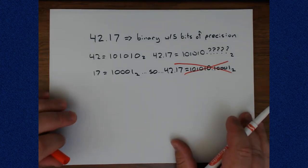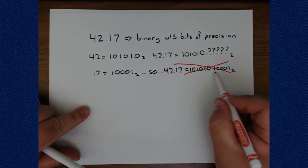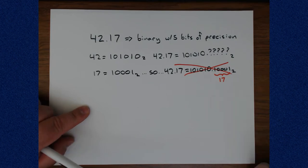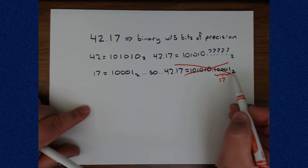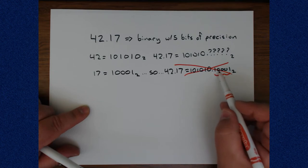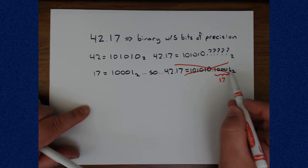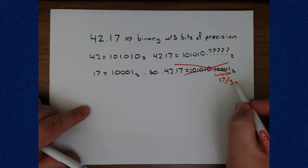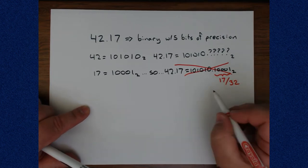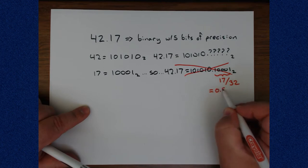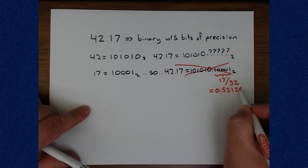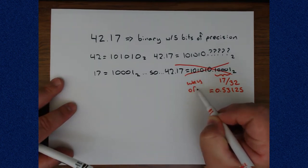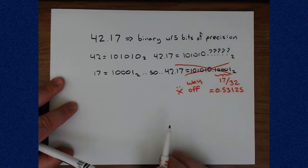This is absolutely not how that works. If nothing else, when we look past the radix point, this is the quantity 17, that is correct, but it is now in terms of the lowest digit position, which is bit 1, 2, 3, 4, 5 in the negative direction. And 2 to the negative fifth is 1/32. So this really is, from the fractional side, 17/32, which is equal to 0.53125.